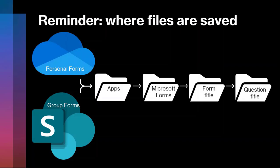As a refresher: when working with personal forms, those files are saved into the OneDrive of the person who created the form. In the case of a group form, files are saved into the documents library in that group's SharePoint team site. In either case, the path goes through My Files or Documents, then a folder called Apps, then Microsoft Forms, then the form name, and finally the question title.